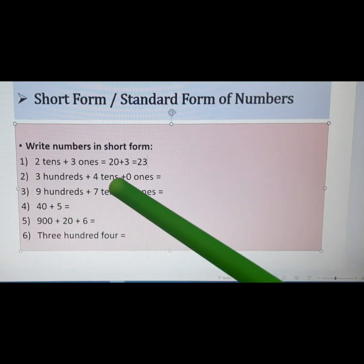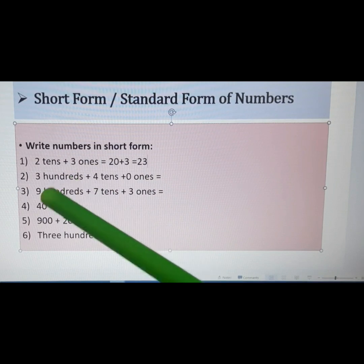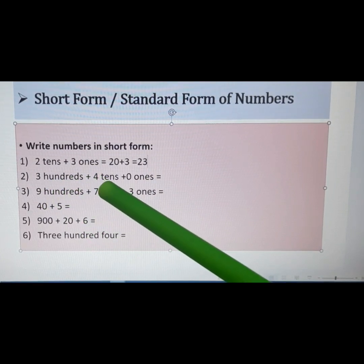So now go to the next question. 300 plus 4 tens plus 0 ones. Means this time we have 300, now we have 3 blocks. We have 4 tens, 4 strips. But we don't have any pieces.